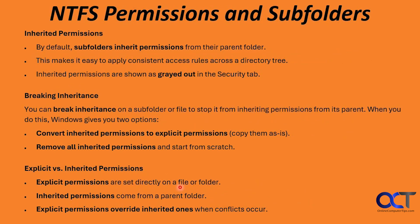Permissions are inherited from the parent folder. If the security tab appears grayed out on a subfolder, that's why — you'll need to change permissions from the parent folder. To break inheritance on a subfolder or file, you have two options: convert the inherited permissions to explicit permissions, or remove all inherited permissions and start from scratch. For example, if you copy a folder into another folder and don't want it to share the parent's permissions, you can use this to create its own custom permissions.